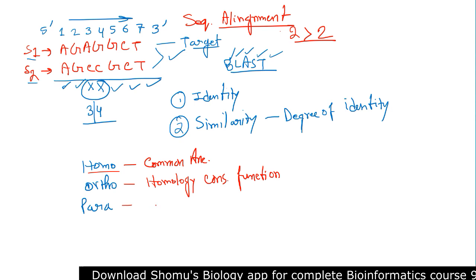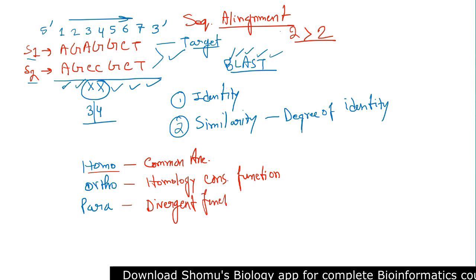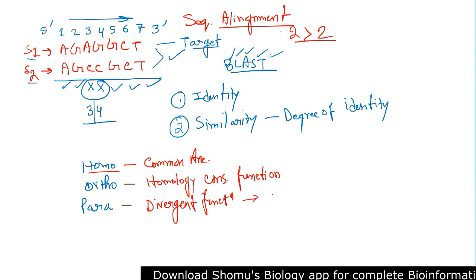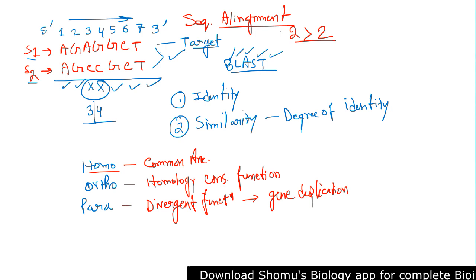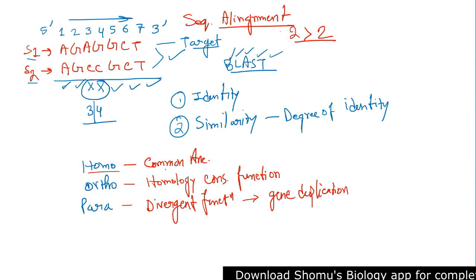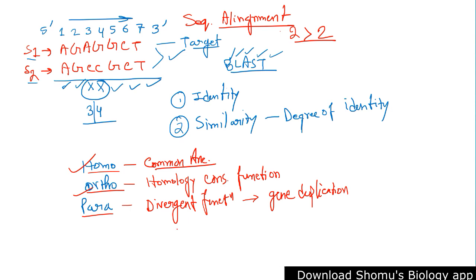Paralogous refers to homology with divergent function. This divergence can be due to gene duplication — gene duplication can cause divergent function. Insertion and deletion can also contribute. So: homologous sequences are derived from a common ancestor; orthologous means homology with conserved function in different species; and paralogous means homology with divergent function, generally resulting from gene duplication.